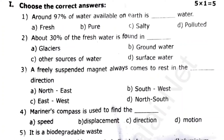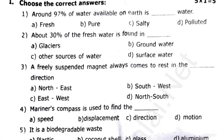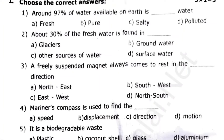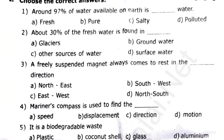First, you have one word. Around 97% of water is available. About 30% of the fresh water is found in DAS. A freely suspended magnet always comes to rest in the DAS direction. The inner compass is used to find the DAS. It is a biodegradable waste.